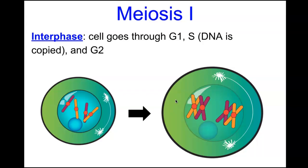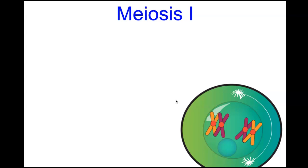In meiosis I, like mitosis, the cell first goes through interphase: G1 for growth, S phase where DNA is replicated, and G2 where the cell preps for division while continuing normal functions and growing in size. Then the cell enters meiosis I, beginning with prophase I.